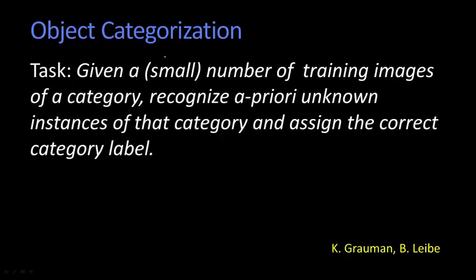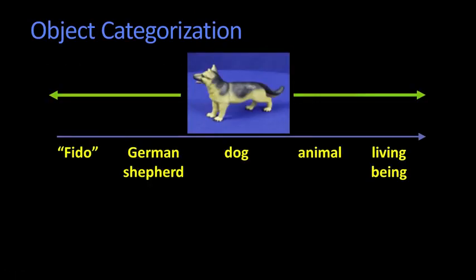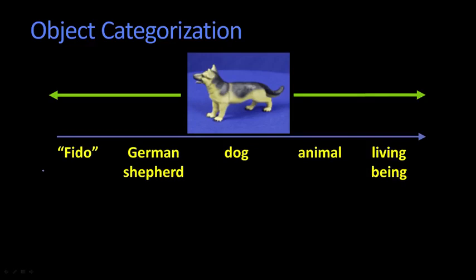All right. So one of the things we have to do before we can even proceed is we have to agree on a set of labels. And there's this fundamental problem that a single object doesn't have a unique label. So here we have somebody's dog apparently named Fido. I don't know if anybody names their dogs Fido anymore. So you can say, well, this is Fido, or you could say this is a German Shepherd. You could say this is a dog. You could say it doesn't even say, you could say it's a mammal. You could say it's an animal. You could say it's a living thing, although a living being is probably, I don't know. But it is these things, right? So there's this question is, what categories are best for visual identification? Or which ones do we agree upon?